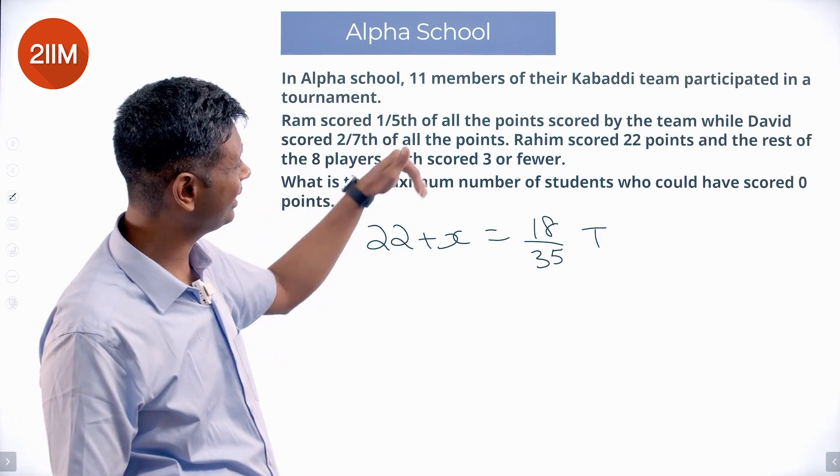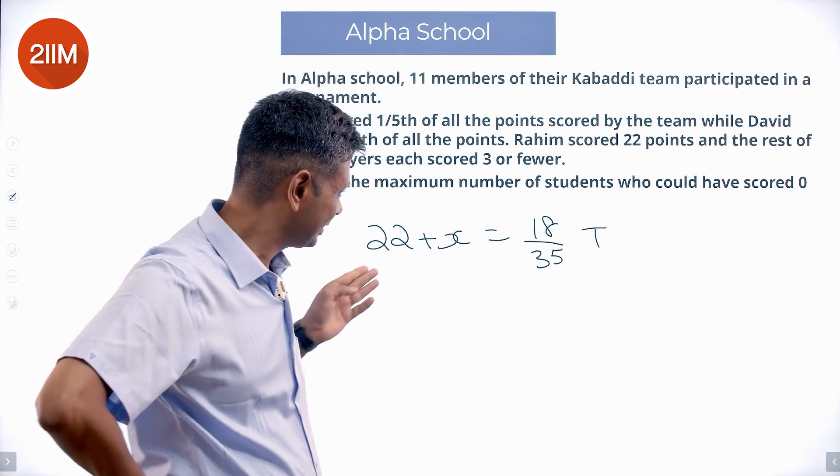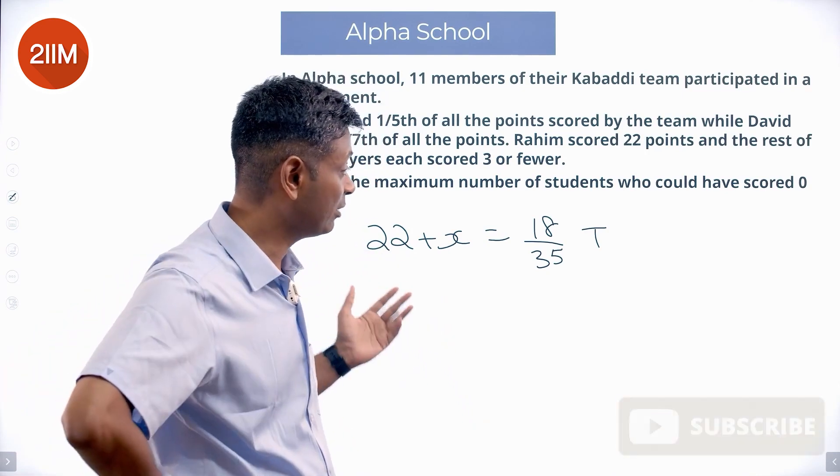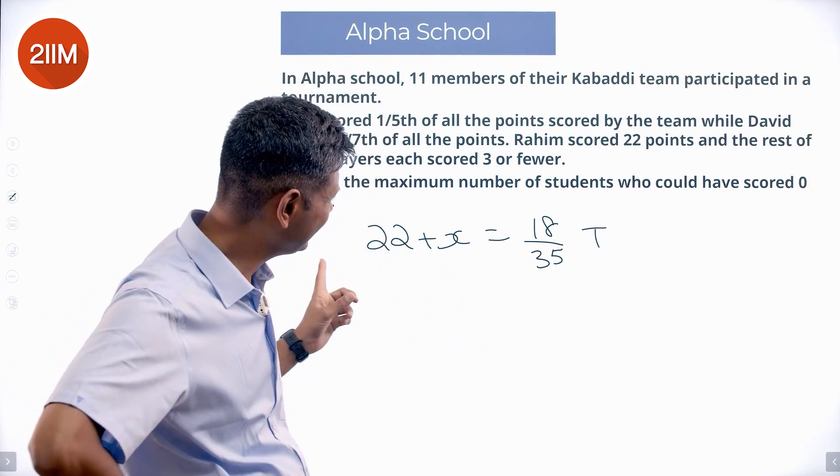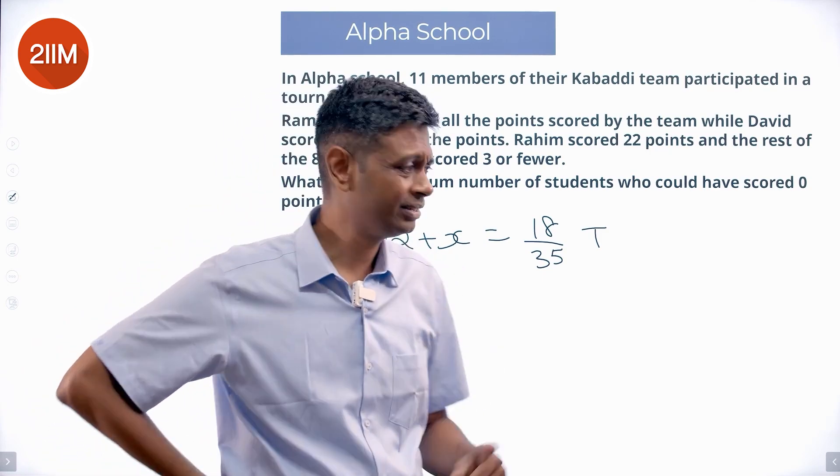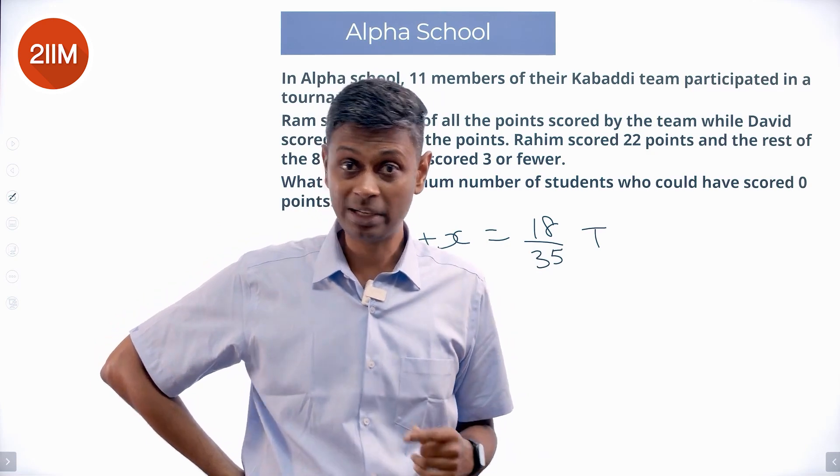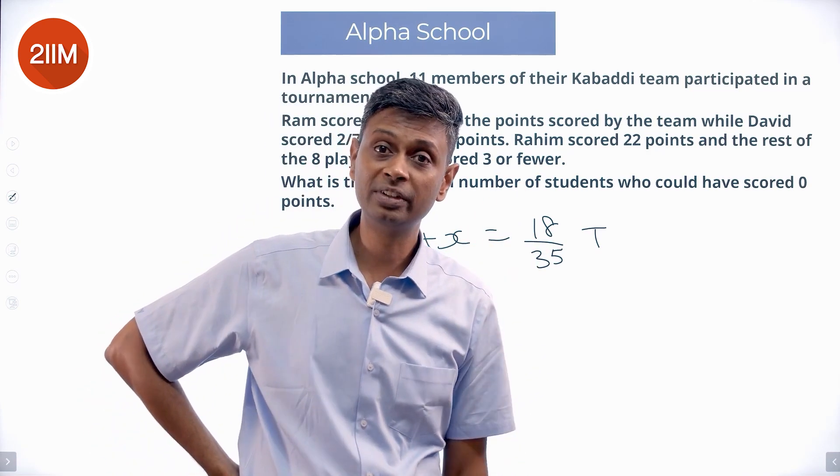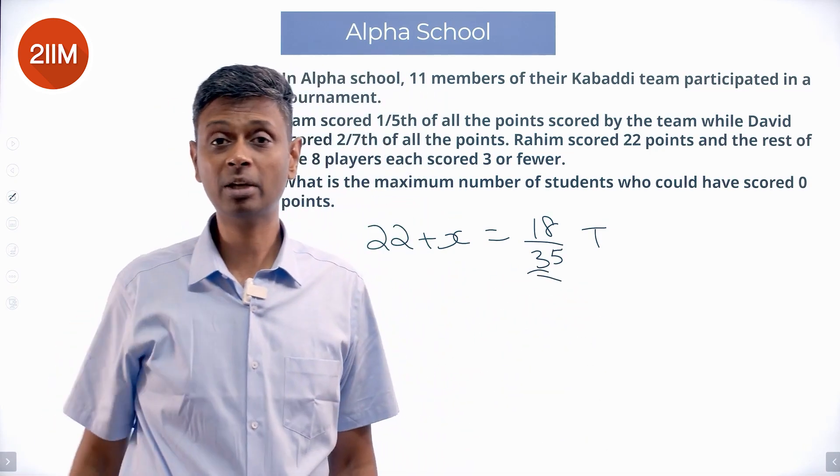Then clearly, the number of points, this answer 22 plus X cannot be 14.9, cannot be 17.3, cannot be 48.11, cannot be 37.65. This is a nice integer. This side should also be a nice integer. That means 18 by 35 times the total should be an integer.